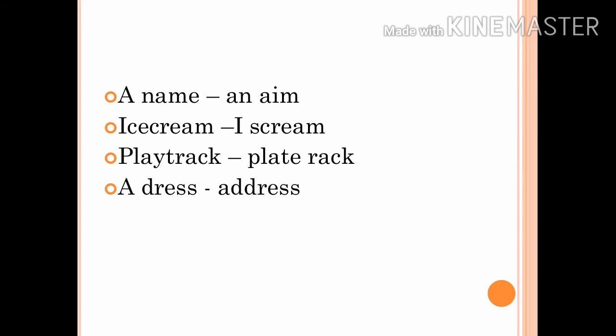These are other examples of this type which differ in meaning because of difference in juncture: 'a name' and 'an aim', 'ice cream' and 'I scream', 'playtrack' and 'plate rack', 'a dress' and 'address'.